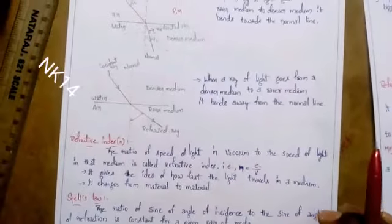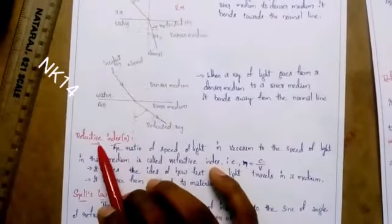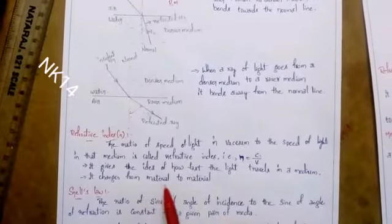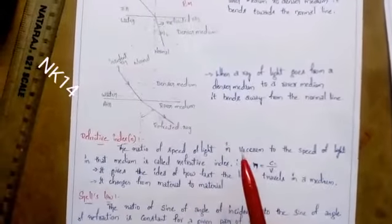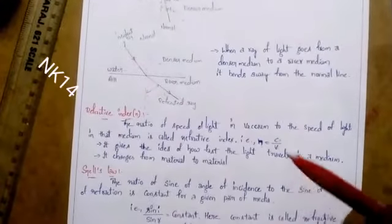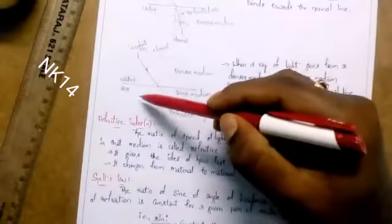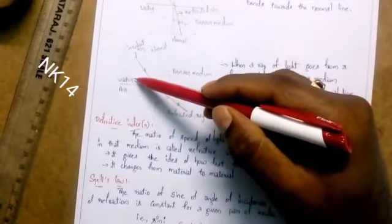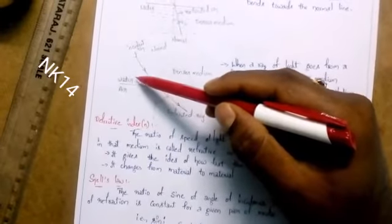The refractive index tells you how fast light travels in a medium, and it changes from material to material. As the density varies, the speed of light varies — for example, the speed of light in air is more than in water. So the refractive index changes from material to material.